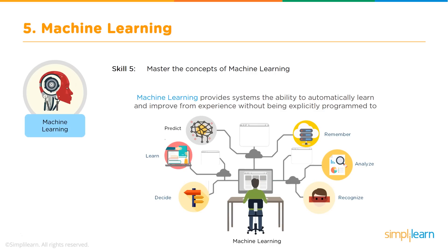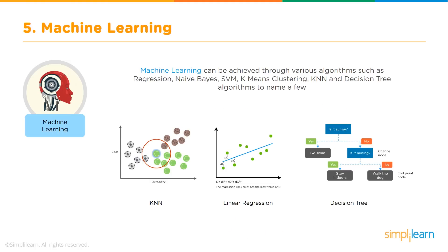Skill number five: machine learning. Machine learning provides systems the ability to automatically learn and improve with experience without being explicitly programmed to do that. Machine learning can be achieved through a number of different algorithms like regression, Naive Bayes, SVM, k-means clustering, KNN, and Decision Tree, just to name a few.